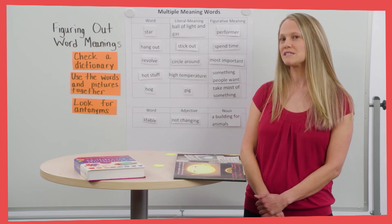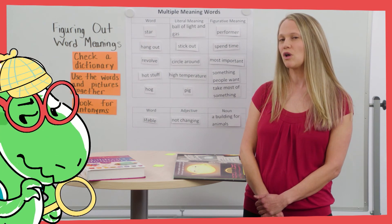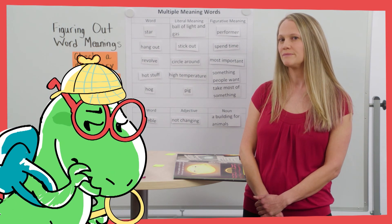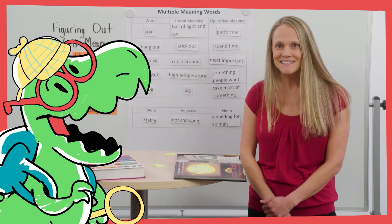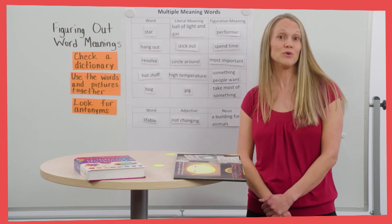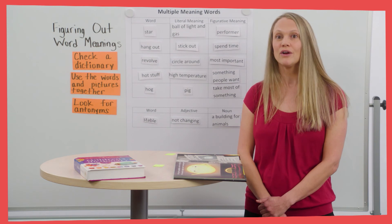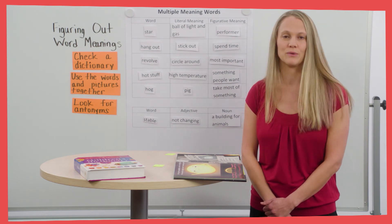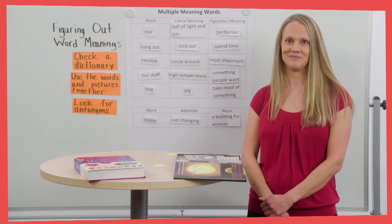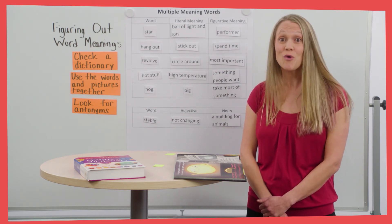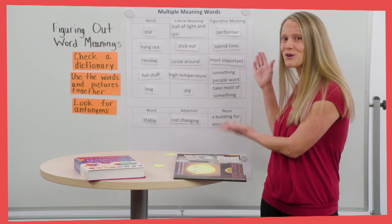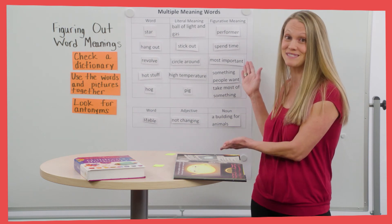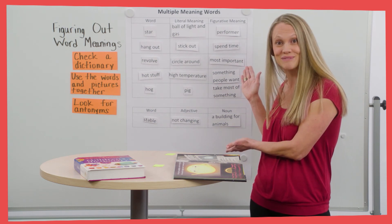What else might you expect to find in a stable along with a horse? Maybe some food, water, a brush for its tail, or anything else that a horse might need. Great job finding so many multiple meaning words for our chart, word detectives. You really rose to the challenge.